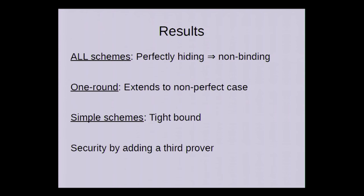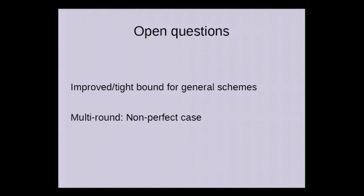So to sum up, in the non-signaling case all perfectly hiding schemes are not binding at all. In the one-round case that also extends to schemes that are not perfectly hiding, and finally for the simple schemes we have a tight bound that can't be improved upon. And we get security by adding a third prover. The remaining open questions are if it's possible to improve the bound for general schemes and if we can do anything in the multi-round case.